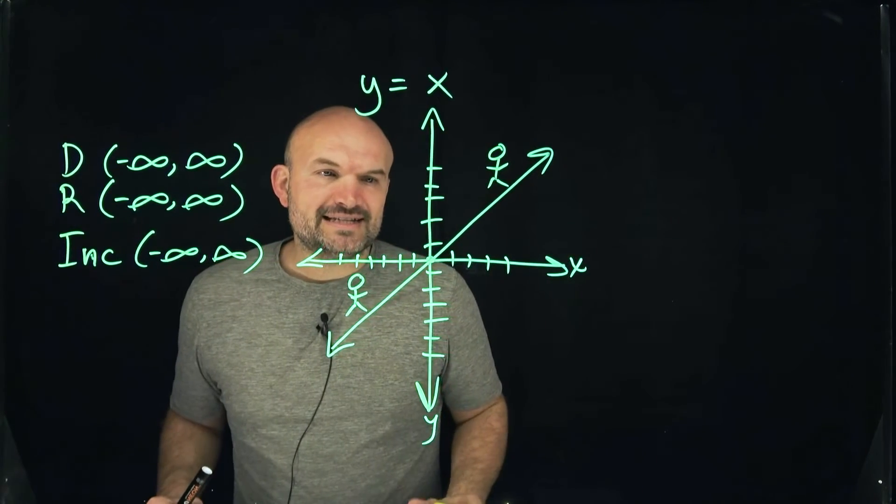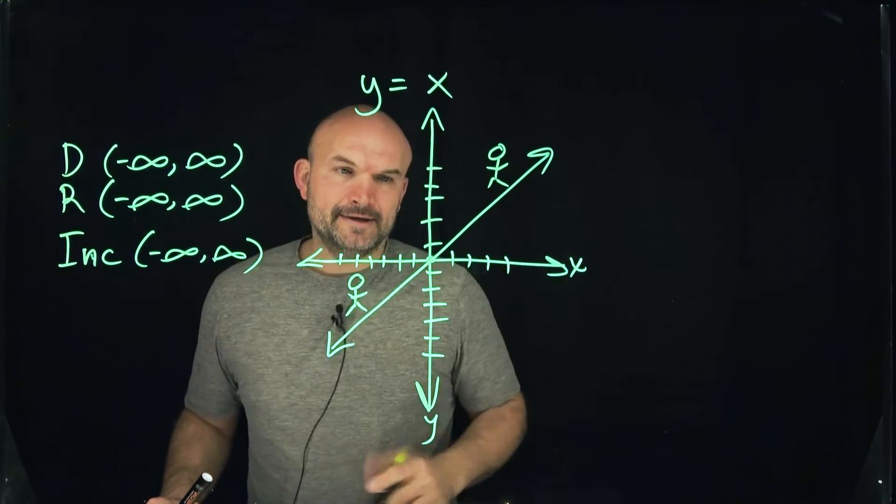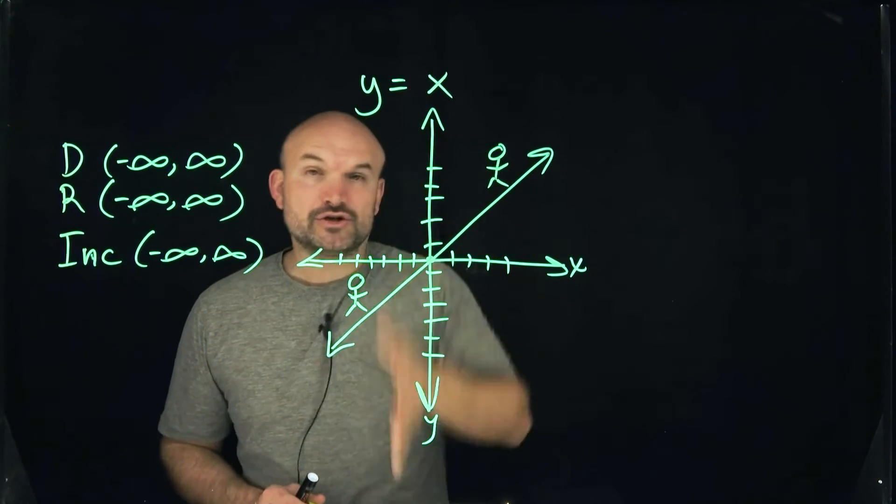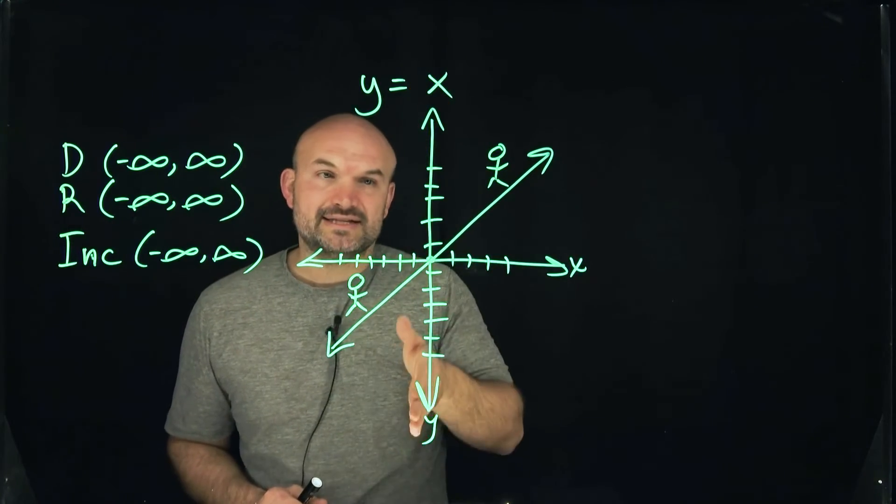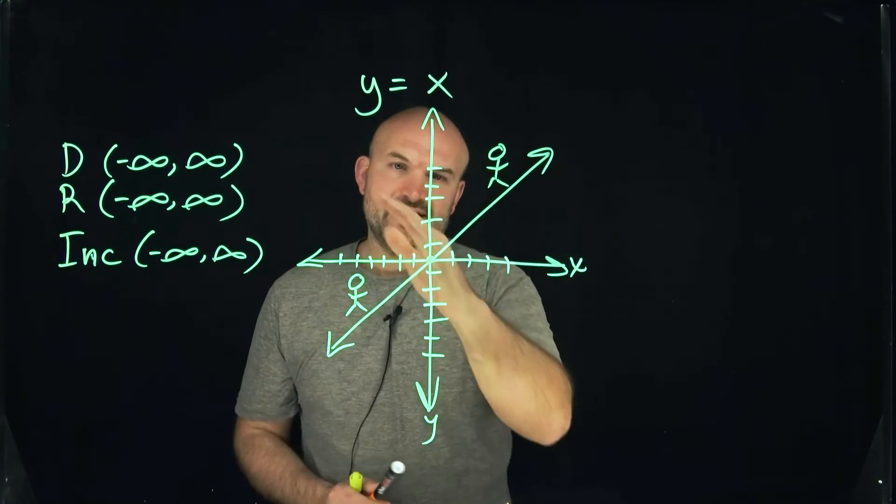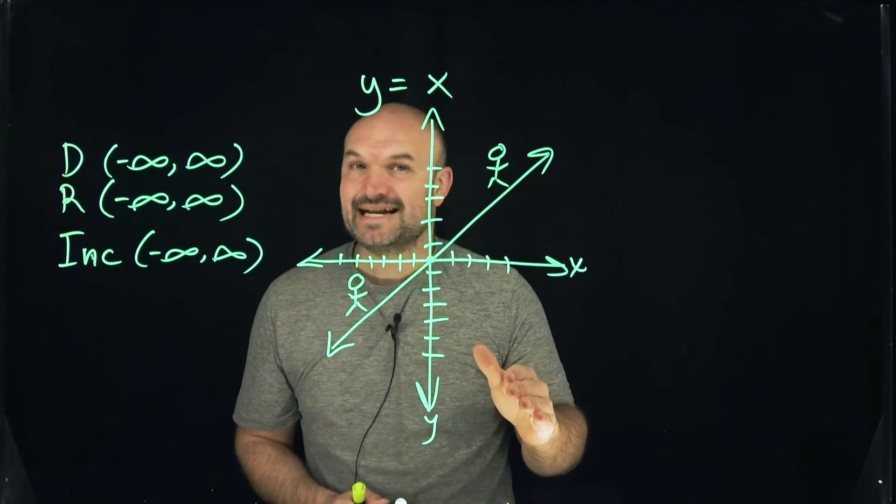The next thing we want to look at is: is the graph even or odd? The best way I like to remember is even graphs are always symmetrical about the y-axis. If you take this graph and flip it across the y-axis, you would have something that looks like this. That's not the exact same graph.